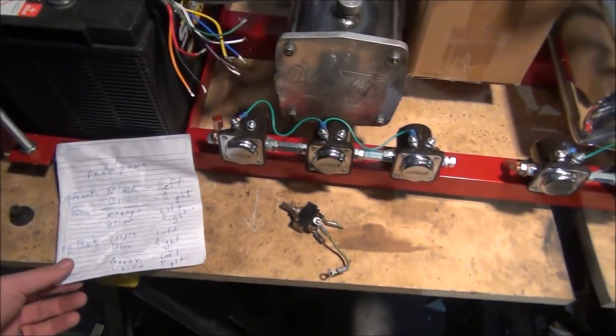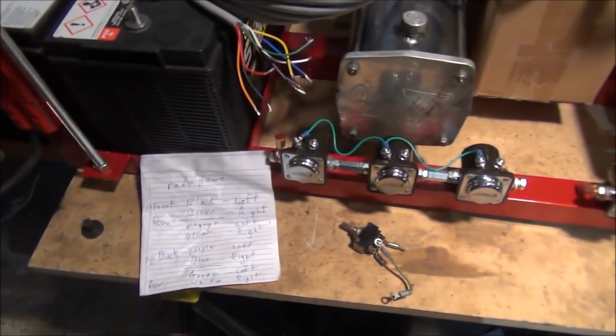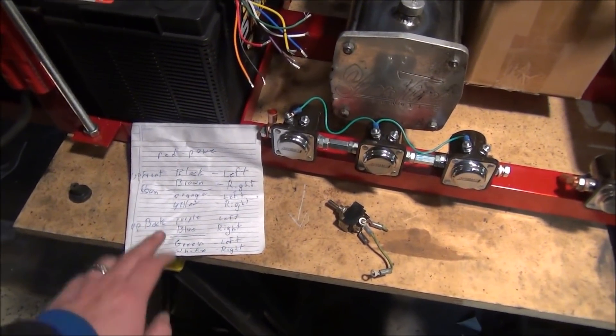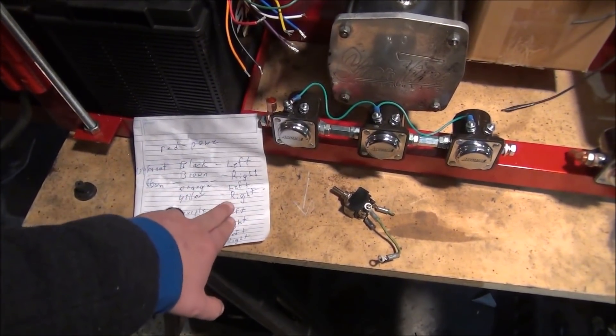Alright, so now we talk about dumps. The dump wires are pretty simple as well. We know that your dump wires are orange and yellow, left and right.